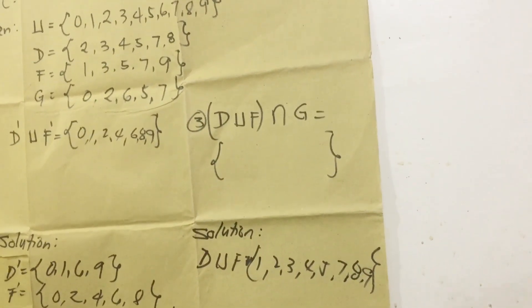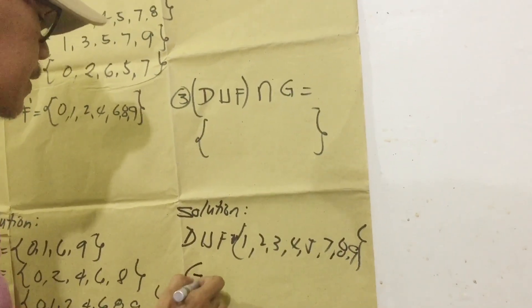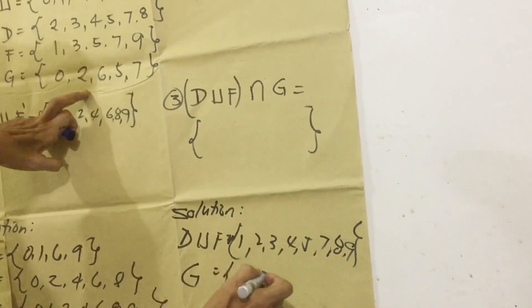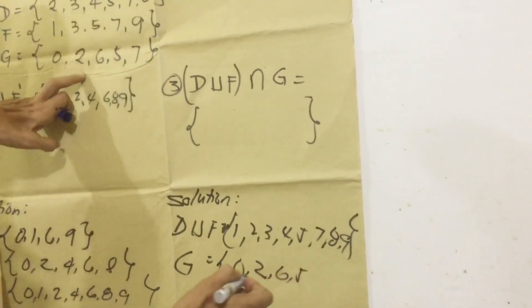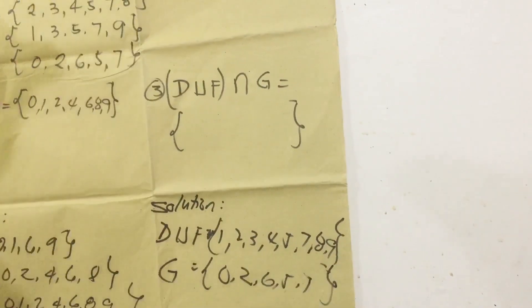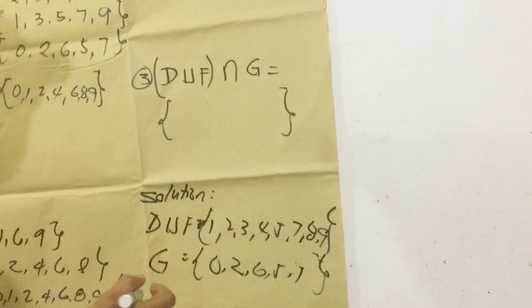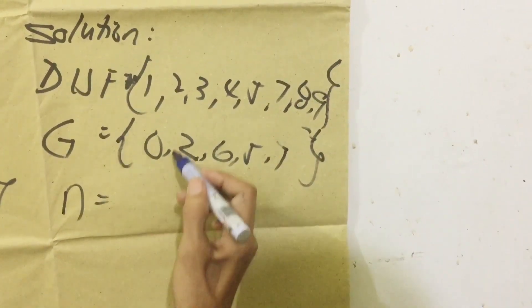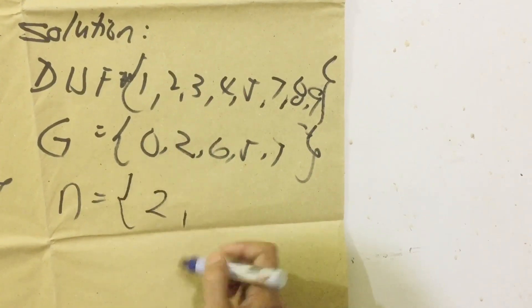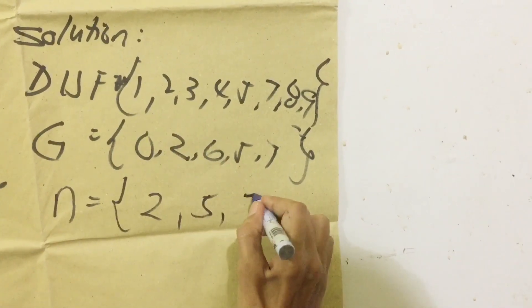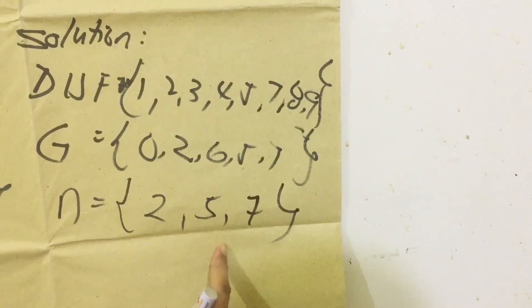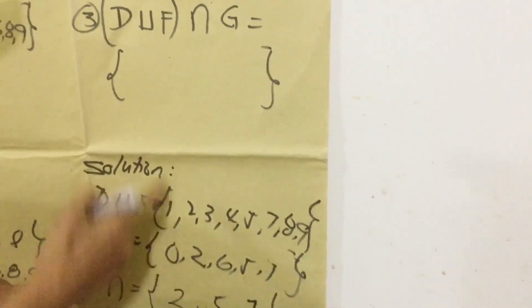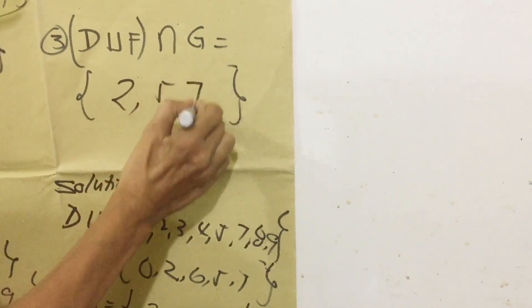So ngayon ay kunin natin yung elements ng G. So the elements ng G ay 0, 2, 6, 5, 7. Ngayon, kunin natin yung sinasabi niya na intersection. So ang intersection ngayon ay yung common dito sa dalawang sets. So ang common ay 2, 5, 7. So ito nga yun yung intersection. So ang final answer natin ngayon, yung intersection G is 2, 5, and 7.